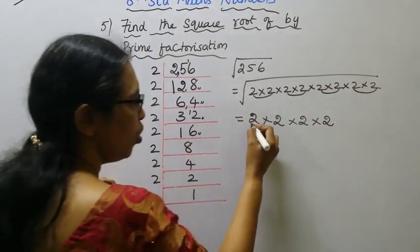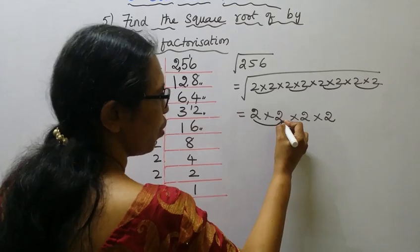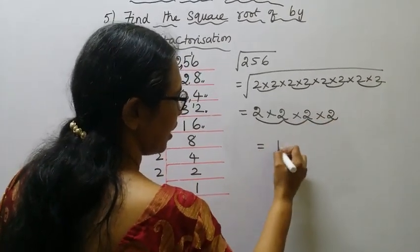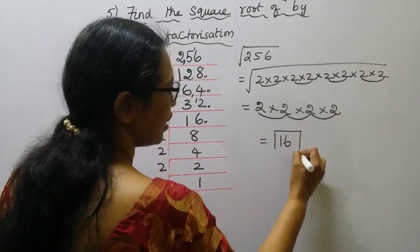Multiply every pair: two 2's are 4, four 2's are 8, eight 2's are 16.